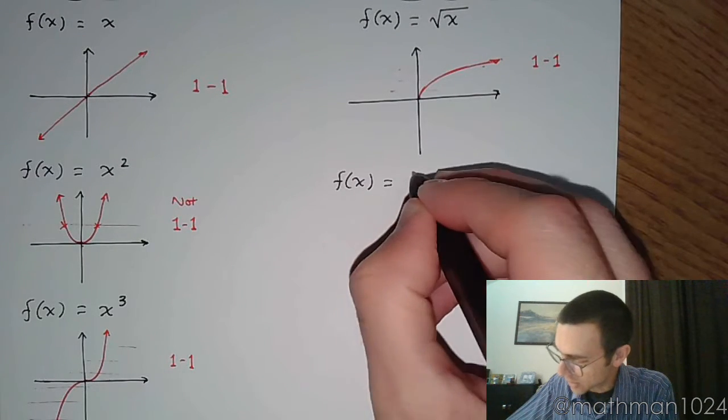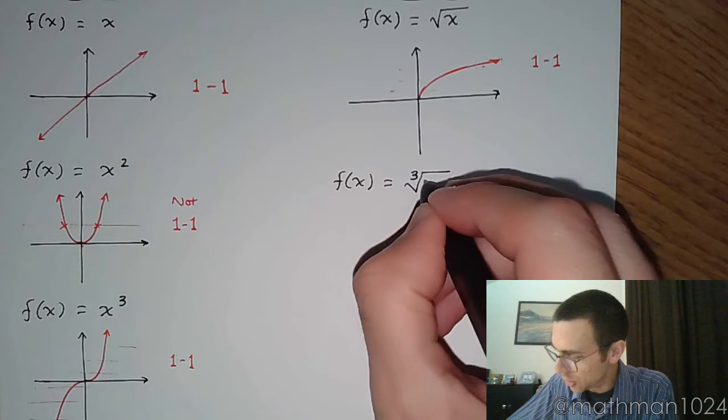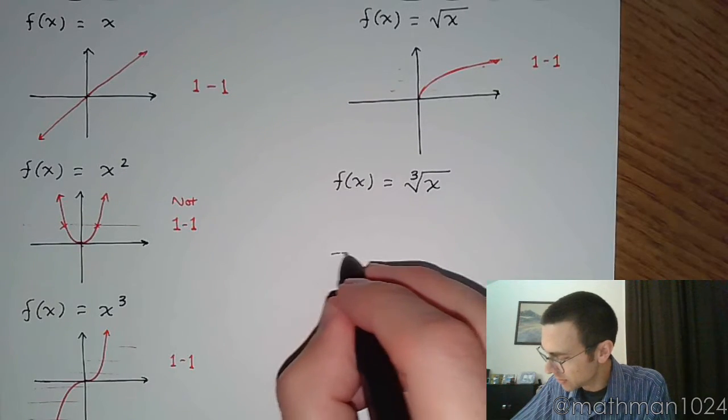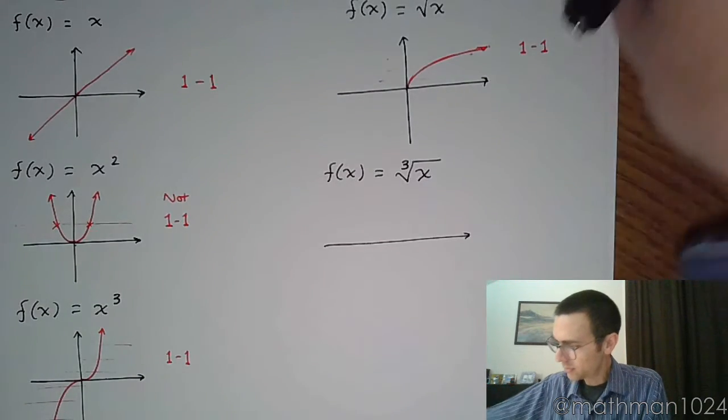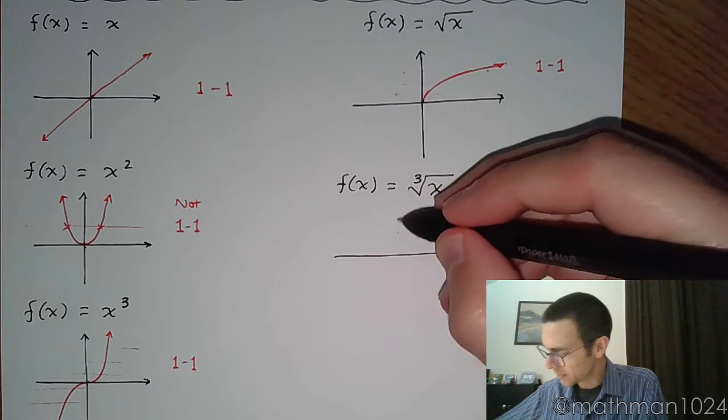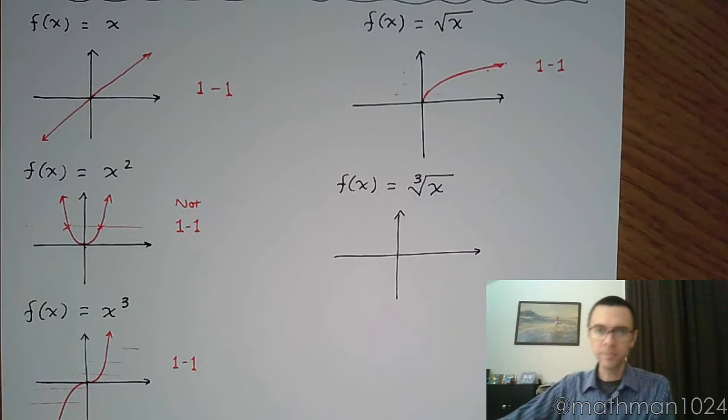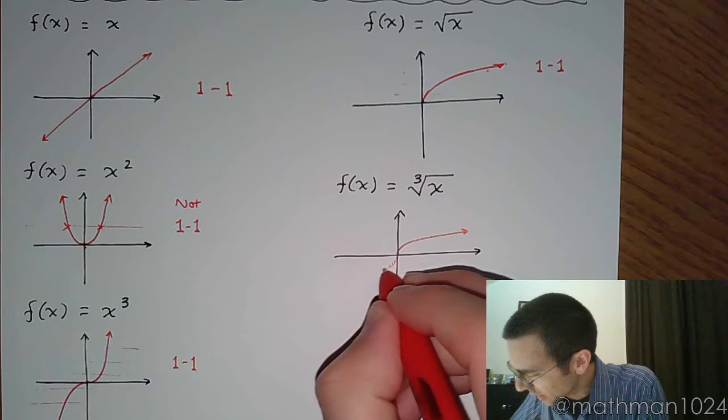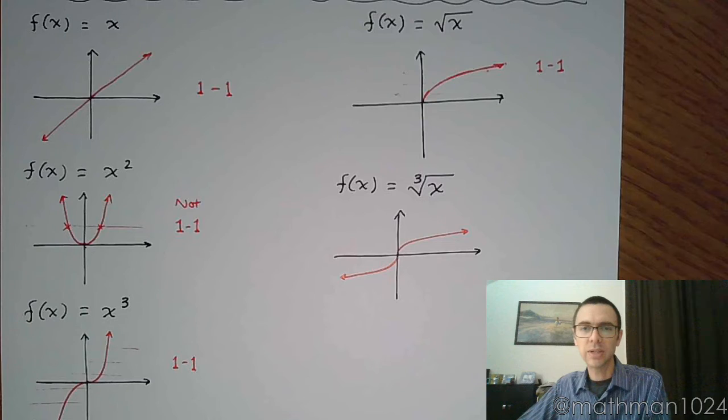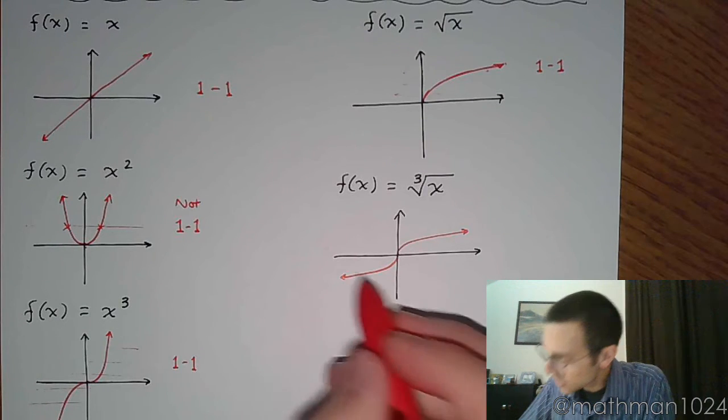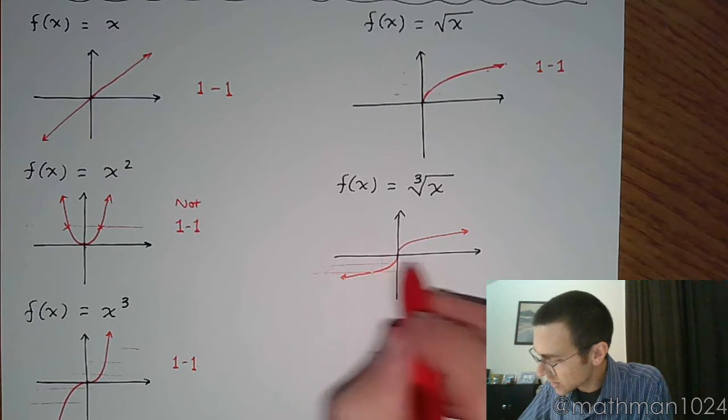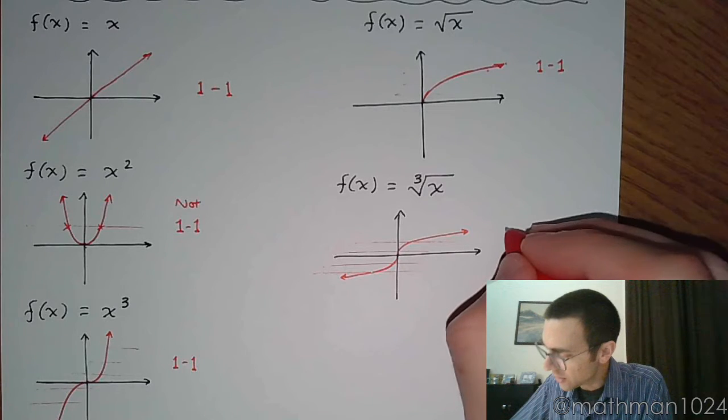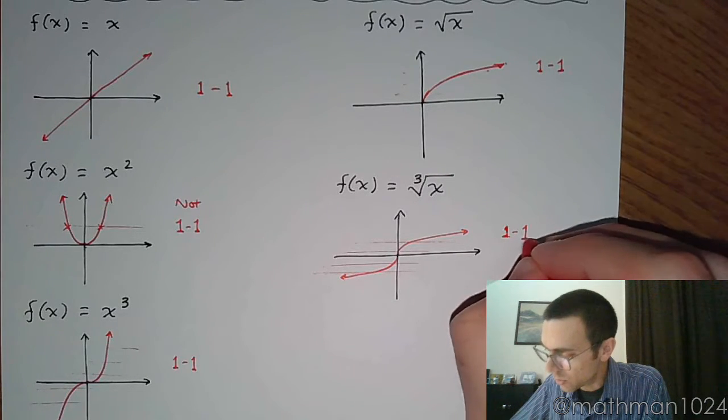We did look at another radical function, the cube root of x. The cube root of x was a little snakey guy who looked like a cactus that had been blown over like that. And as you try to do that horizontal line test, you're going to find out that this is also another one-to-one function.